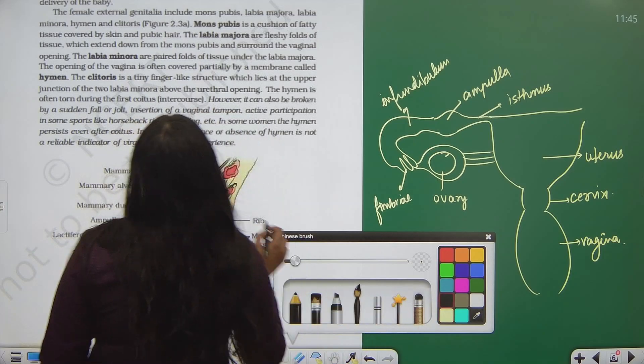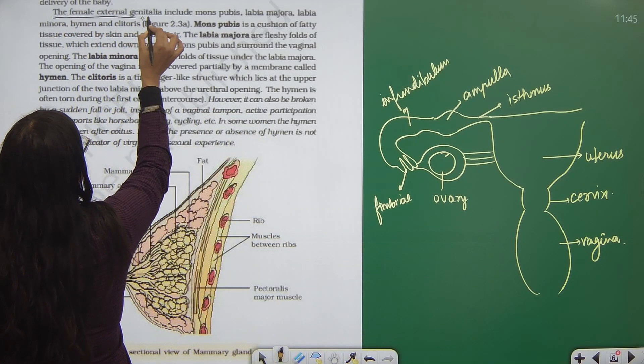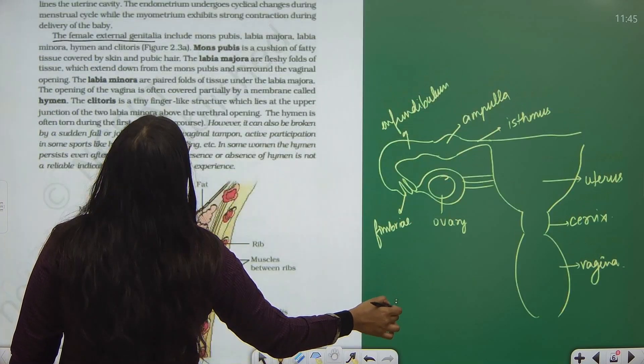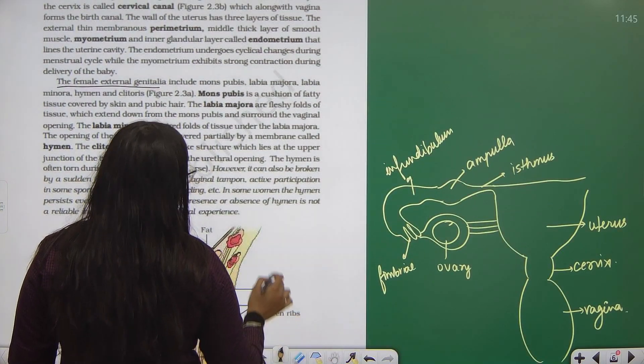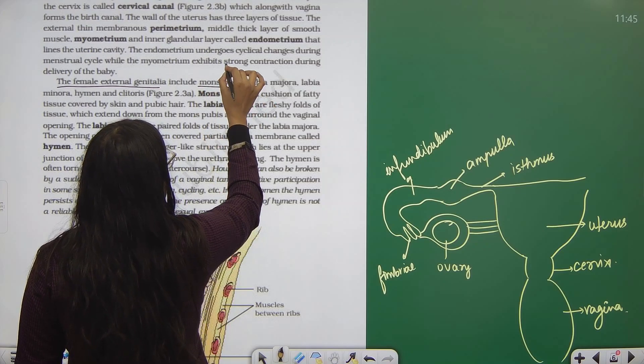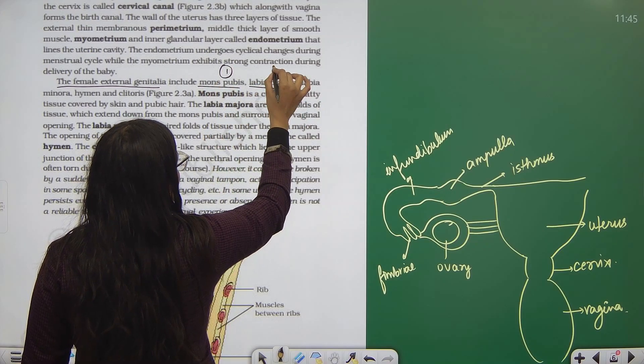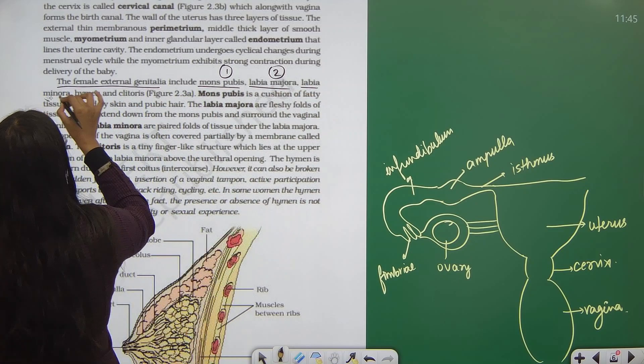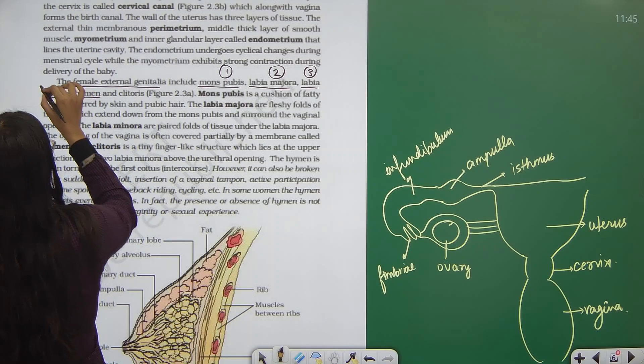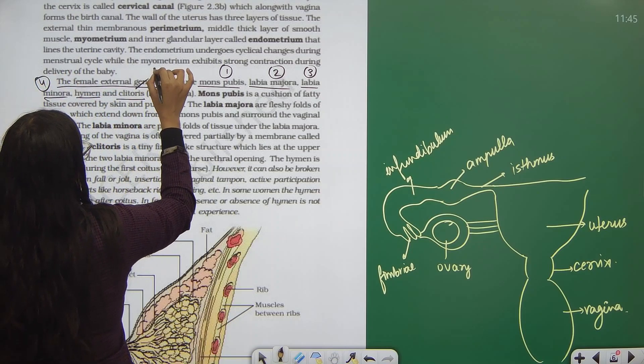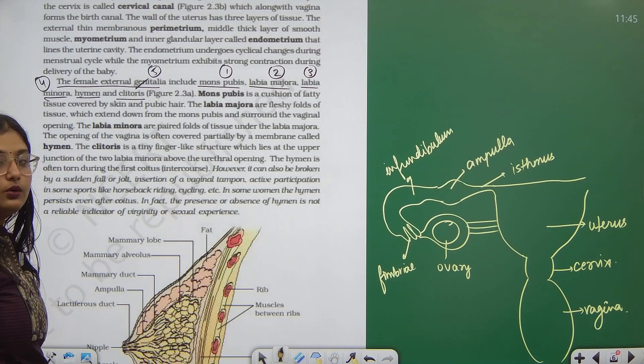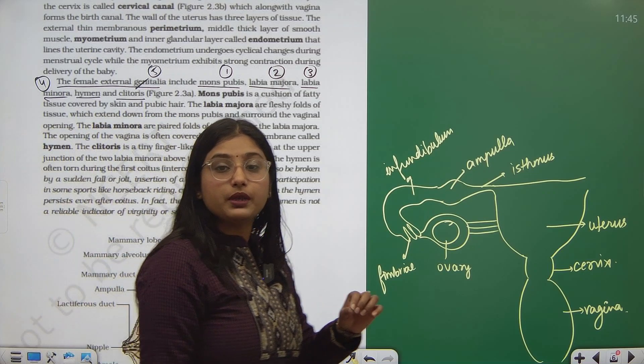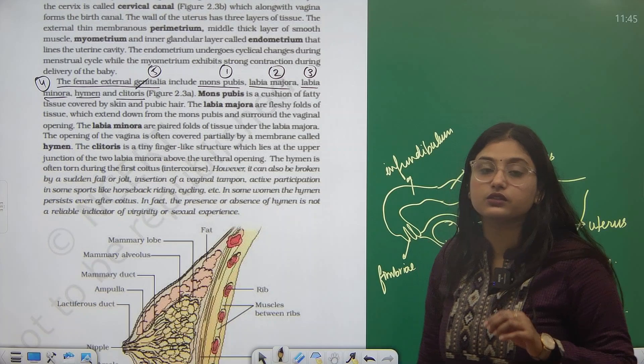Now today we will study the external genitalia. The female external genitalia - what does it include? It includes basic structures like mons pubis first, labia majora second, labia minora third, the fourth part is the hymen, and the fifth part is the clitoris.